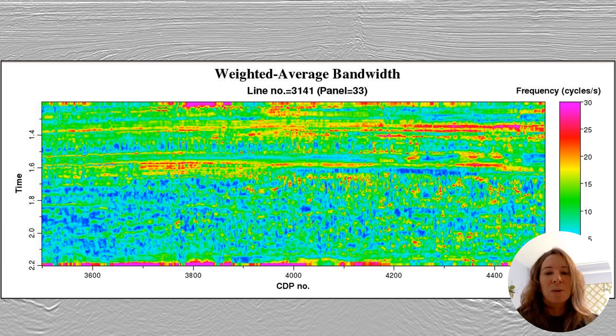The weighted average bandwidth gives us a robust estimate of frequency spectrum's width by measuring the variance of the frequency distribution weighted by the signal's energy. This provides a more meaningful measure of frequency content than just the instantaneous bandwidth itself, which tends to go to zero at envelope peaks where the signal is actually the strongest.